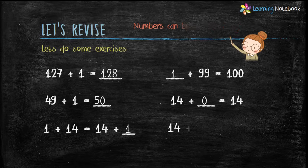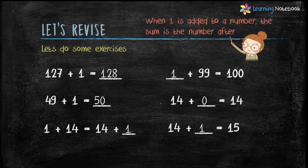14 plus blank equals 15 — the answer is 1, because when 1 is added to a number the sum is the number after, and we know that 15 comes after 14.